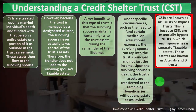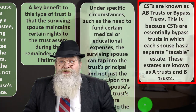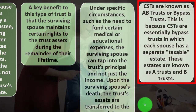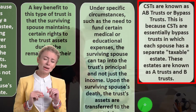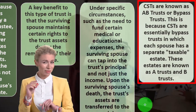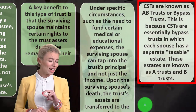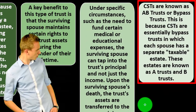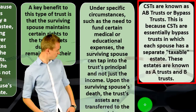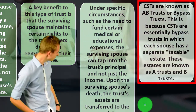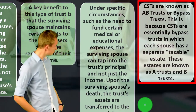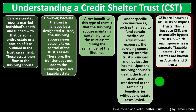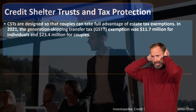CSTs are also known as A/B trusts or bypass trusts — you may hear these terms in other presentations. CSTs are essentially bypass trusts in which each spouse has a separate taxable estate, known as the A trust and the B trust. The goal is to maximize the exemption when one spouse dies, getting the benefit applied to two individuals rather than just one when the second spouse eventually dies.